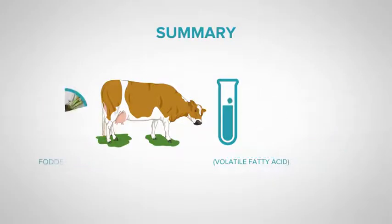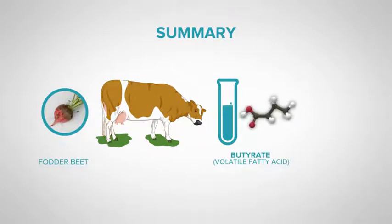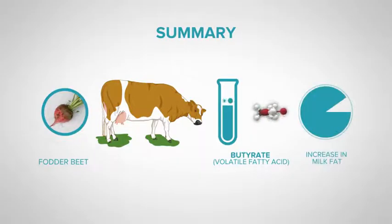Feeding high levels of sugar, such as in fodder beet, will result in an increase in butyrate production, and a subsequent increase in milk fat.